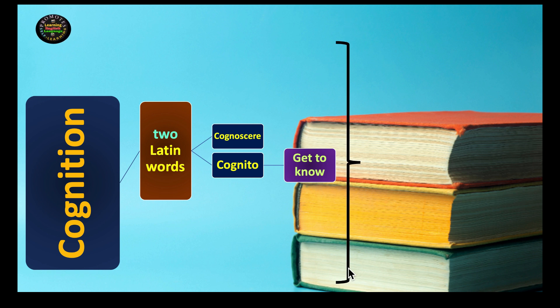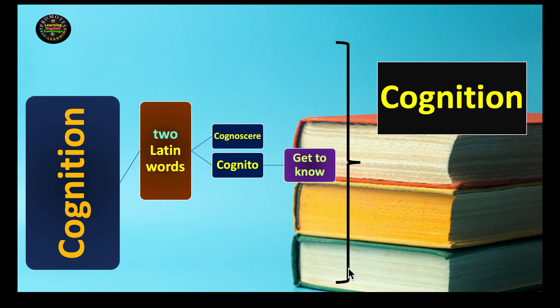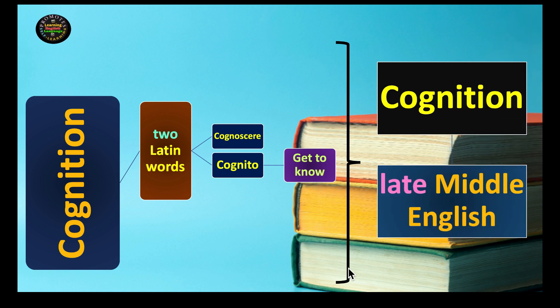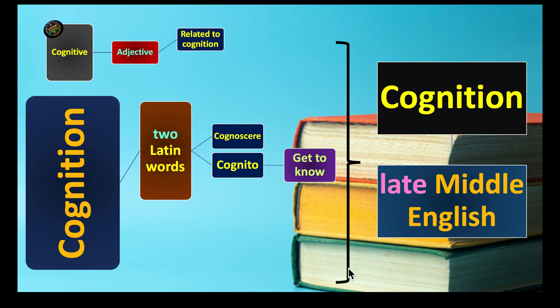The word cognition started being used from late Middle English, which came from the Latin origin. Cognitive is the adjective form of the word cognition, related to cognition. We can say, for example, cognitive skills, cognitive learning, cognitive theory, and so on.